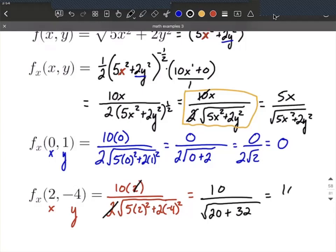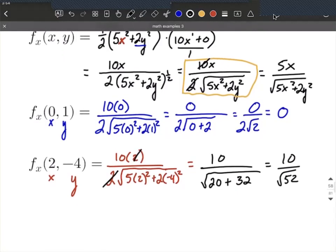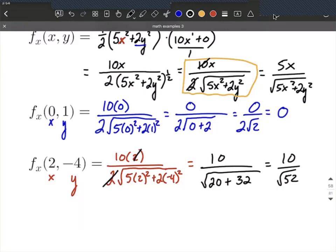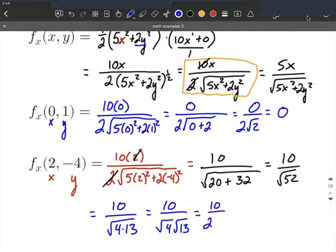An online homework system may accept this, or it may want you to rationalize the denominator. First I would factor 52 a little bit—it can be 4 times 13. So we have 10 over √4 times √13. We were looking for a perfect square that was a factor of 52. √4 makes 2, so it's 10 over 2√13, which simplifies to 5 over √13.